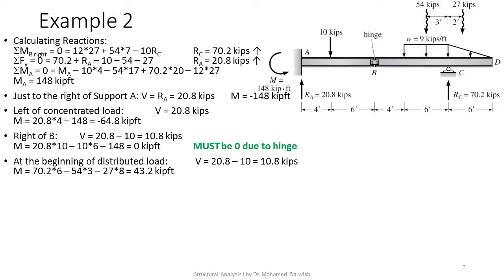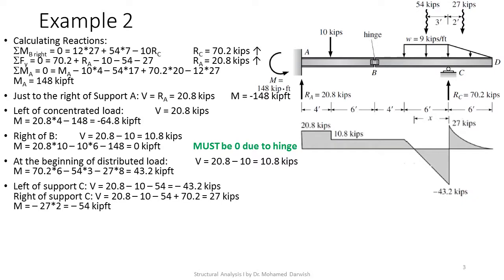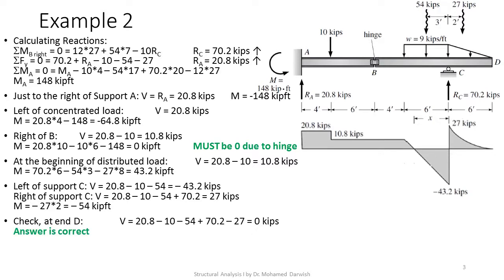At the beginning of the distributed load, V is still 10.8 kips. Moving to a section left of support C: M equals 70.2 times 6 minus 54 times 3 minus 27 times 8 equals 43.2 kip·ft. Left of C: V equals 20.8 minus 10 minus 54 equals minus 43.2 kips. Right of C: V equals 20.8 minus 10 minus 54 plus 70.2 equals 27 kips. The moment there is minus 27 times 2 equals minus 54 kip·ft.